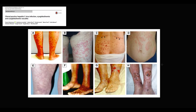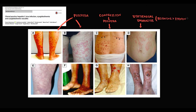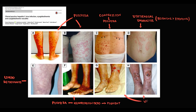Mixed cryoglobulinemia can manifest with various rashes, but most commonly causes purpura — here seen in areas that were compressed. There is also an example of urticarial vasculitis, where burning prevails over itching. Livedo reticularis can be present in all cryoglobulinemias. Purpura can cause hemosiderin deposition, potentially causing irreversible pigmentation. In the last two images, vasculitis causes formation of ulcers.